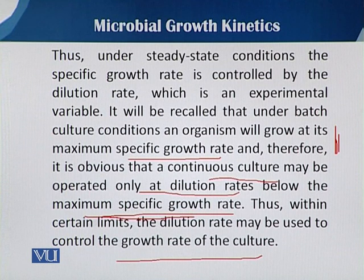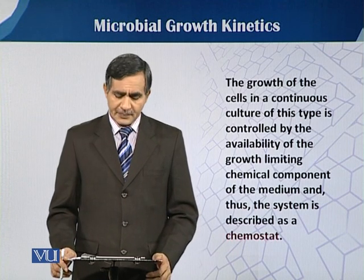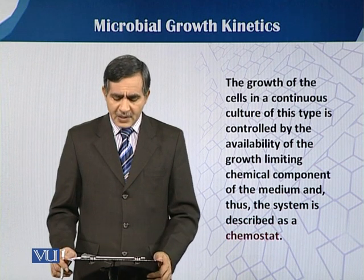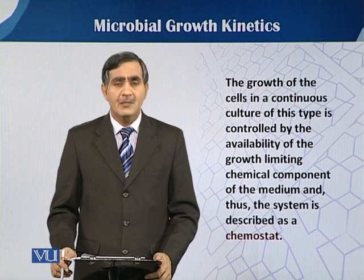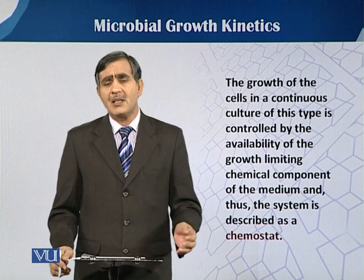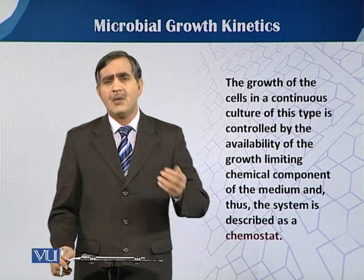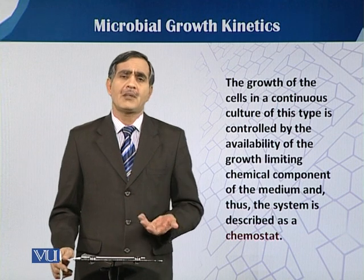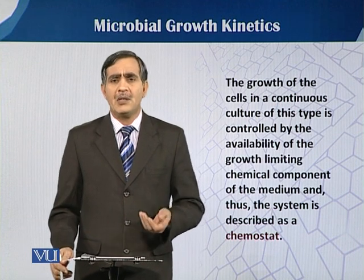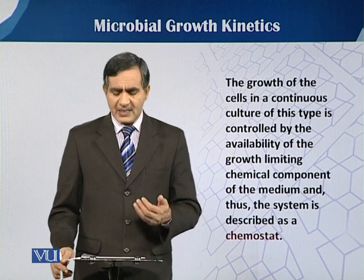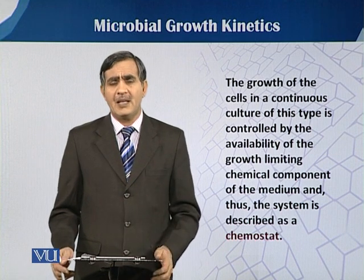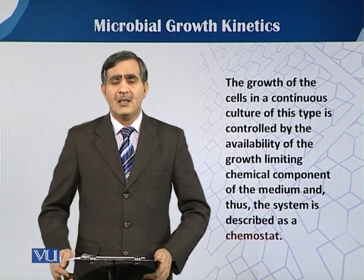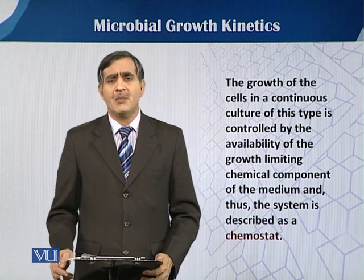The growth of cells in a continuous culture of this type is controlled by the availability of the growth-limiting chemical components of the medium. When continuous culture is running and we are adding media components — chemicals that provide nutrients to the organisms — the steady state that depends on those chemicals is referred to as a chemostat.